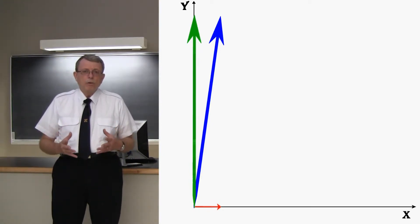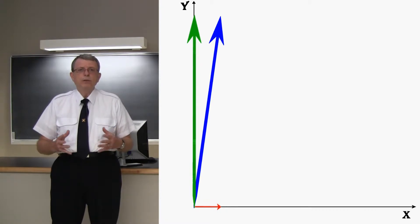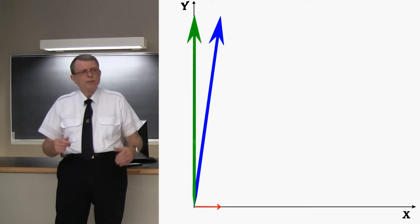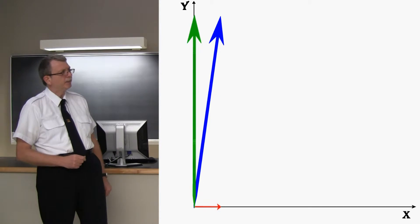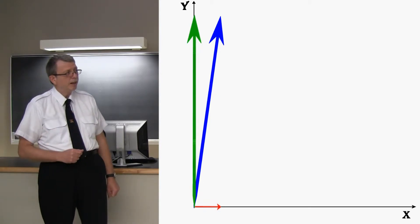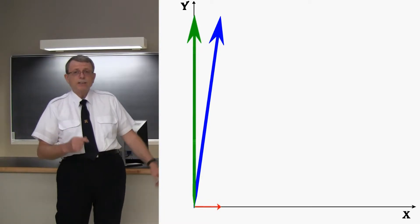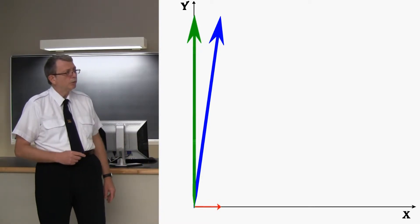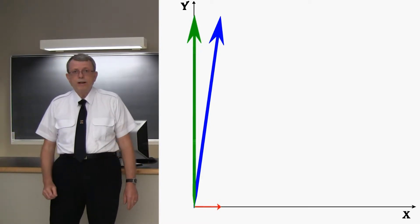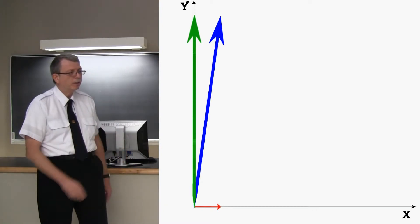Now, we're going to eavesdrop now on an imaginary conversation between two scientists. Since I'm the only one here, I'm going to play both parts and talk to myself. So the first scientist says to the other scientist, oh, I see you have the aerodynamic force plotted on the graph. Yeah, I do, and I've got its components plotted as well. There's its x component in red, and its y component in green.